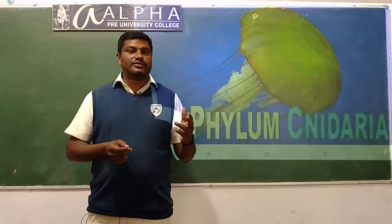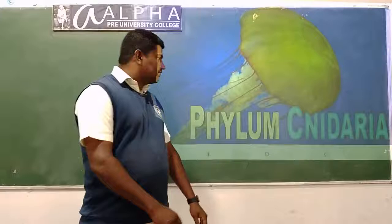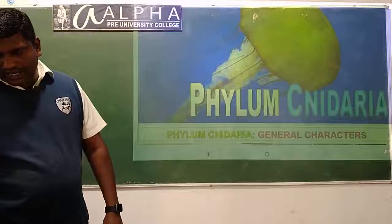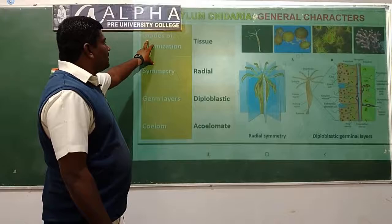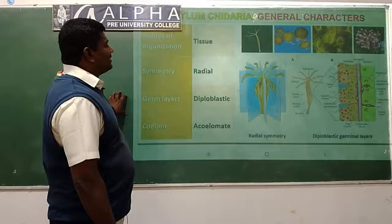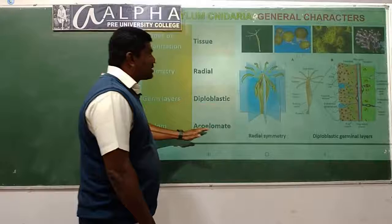Hello students, in this class I will continue the other phylums. In the last class I had discussed about phylum Porifera. In this class we continue the study of the phylums. Phylum Cnidaria - in general characteristics, the tissue level of organization is seen in phylum Cnidaria. They are radially symmetrical, diploblastic, and acoelomates.